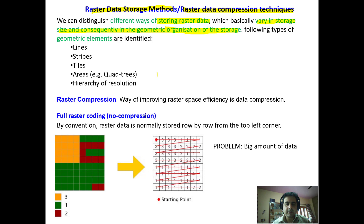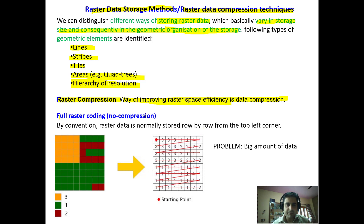The geometric elements identified in raster data storage are: lines, stripes, tiles, areas, or a hierarchy of resolution. We can store raster data by adopting any of these geometric elements — lines, stripes, tiles, areas, quad trees, or hierarchy. Raster compression is the way of improving raster space efficiency, and there are different types of raster data compression.